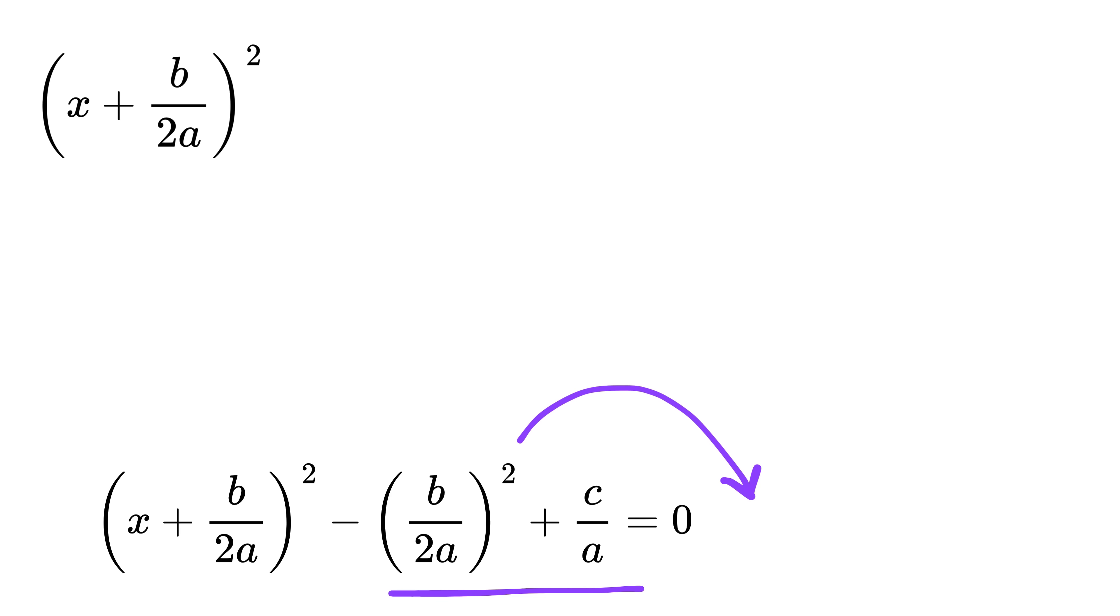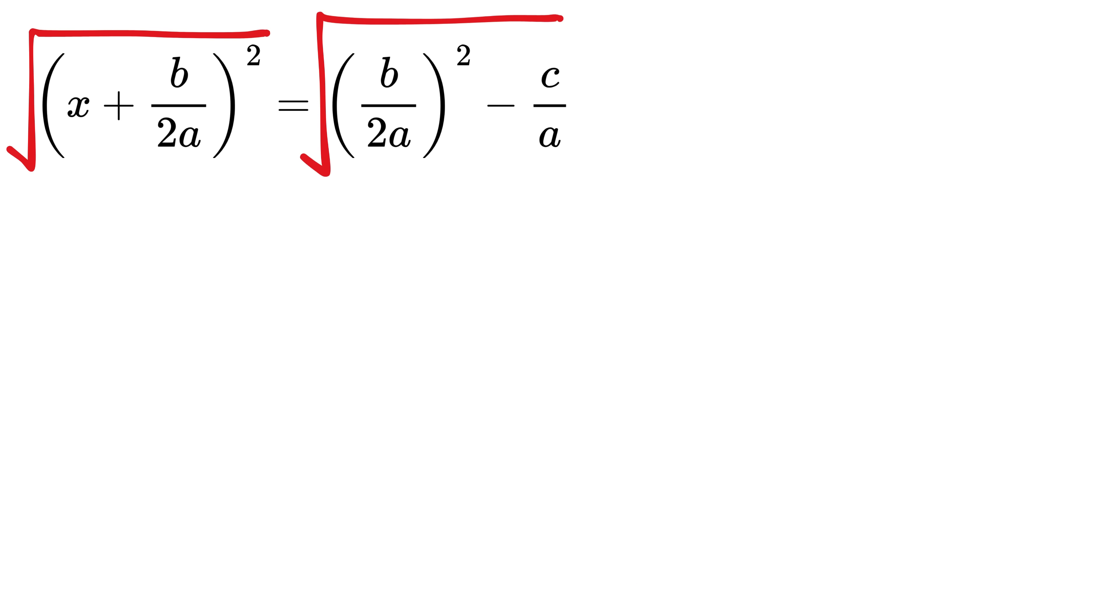So the left becomes (x + b/2a)², and the right side becomes (b/2a)² - c/a. Now we take the square root of both sides. This square will get cancelled with this square root, and on the left we have x + b/2a, and don't forget to include the plus or minus on the right.